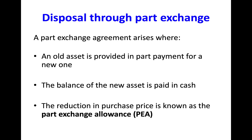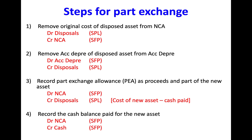We will look at an example later on, but for now we will look at the double entries. The first step is to remove the original cost of a disposed asset from the non-current assets balance. Non-current assets are debits in the SFP, and therefore to reduce that balance you need to credit non-current assets and debit the disposals account.